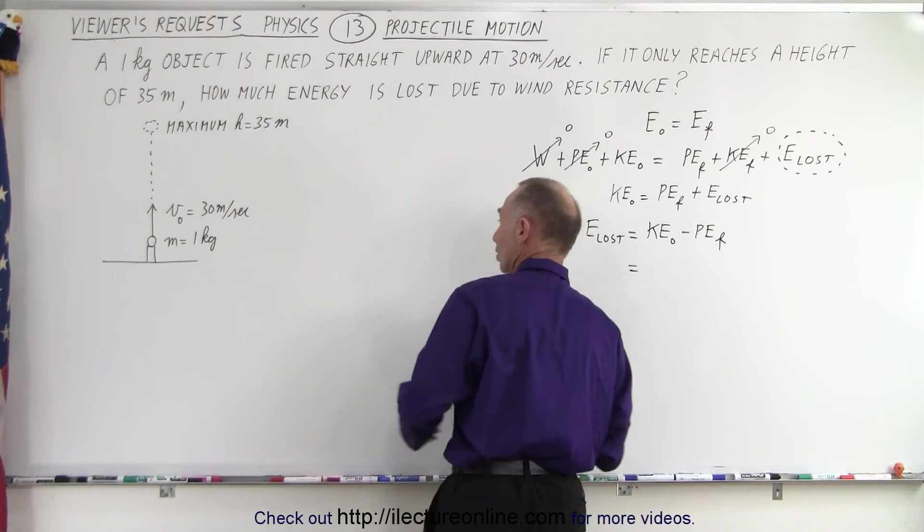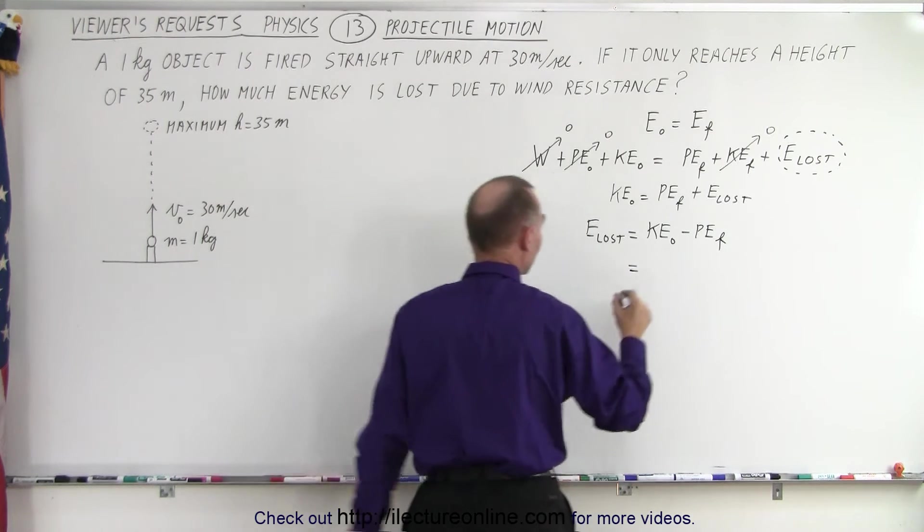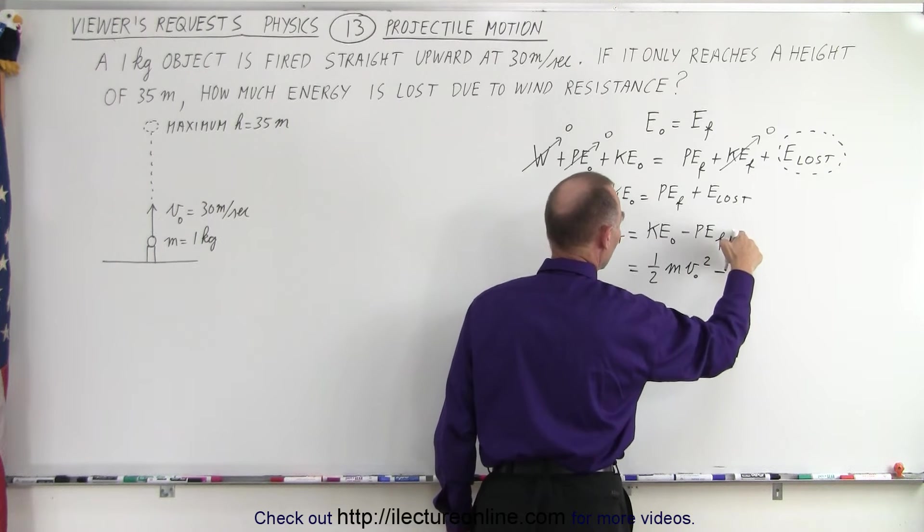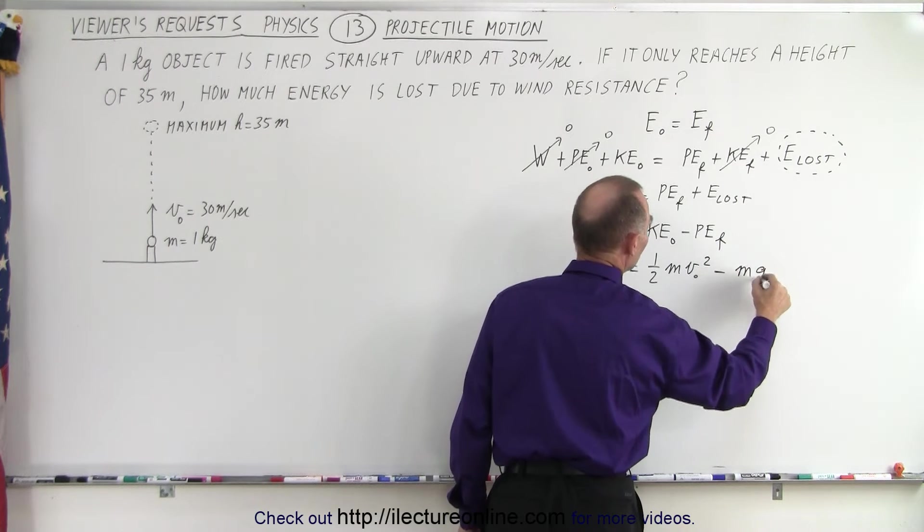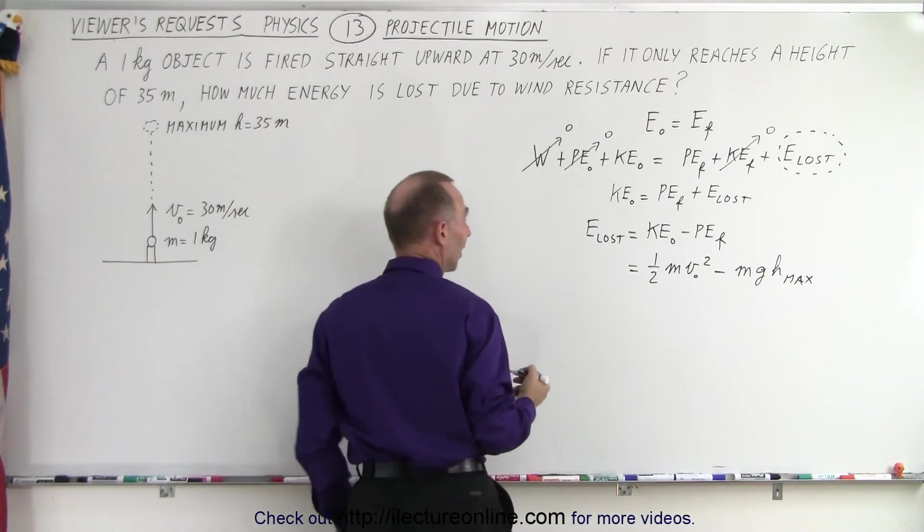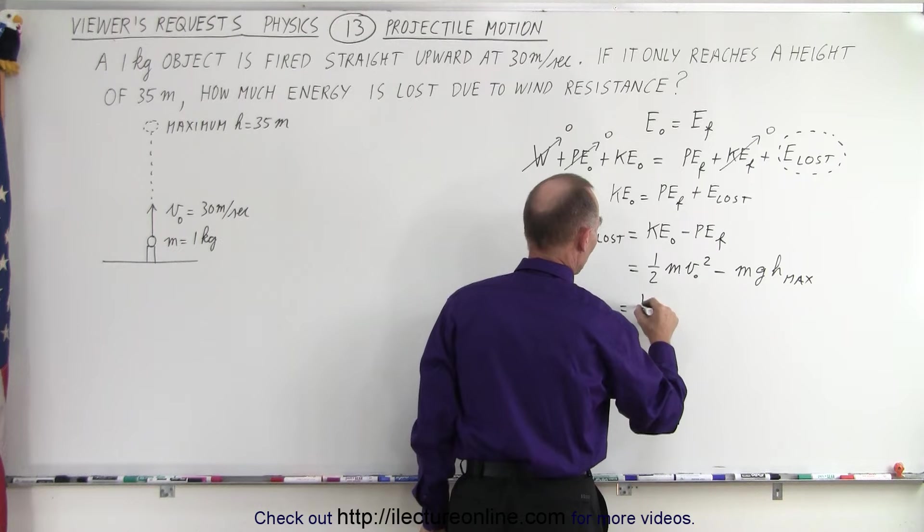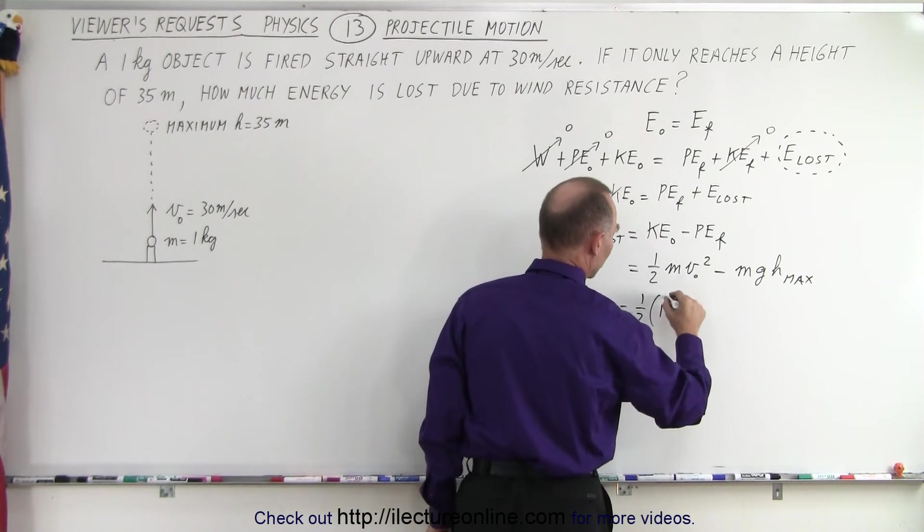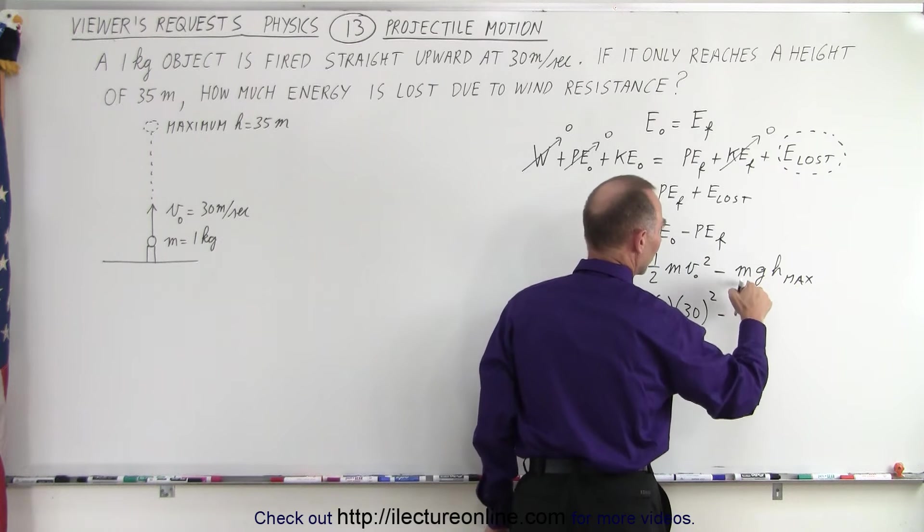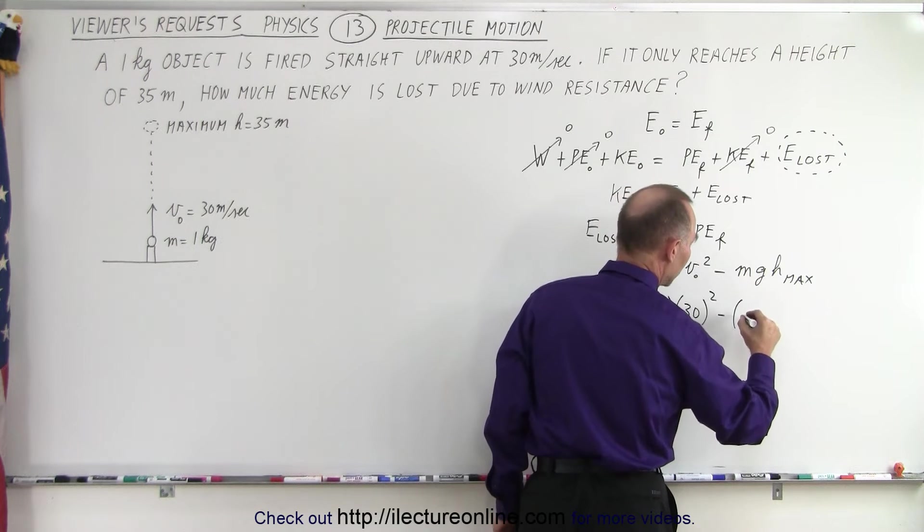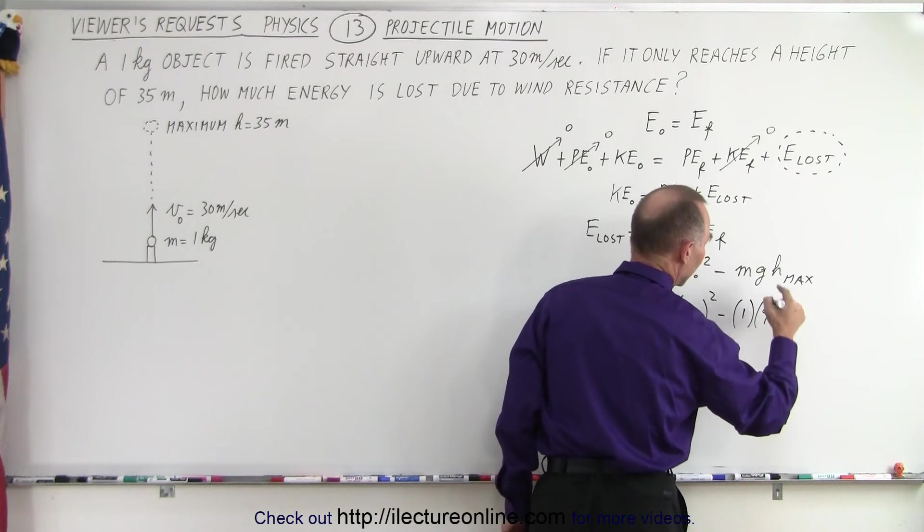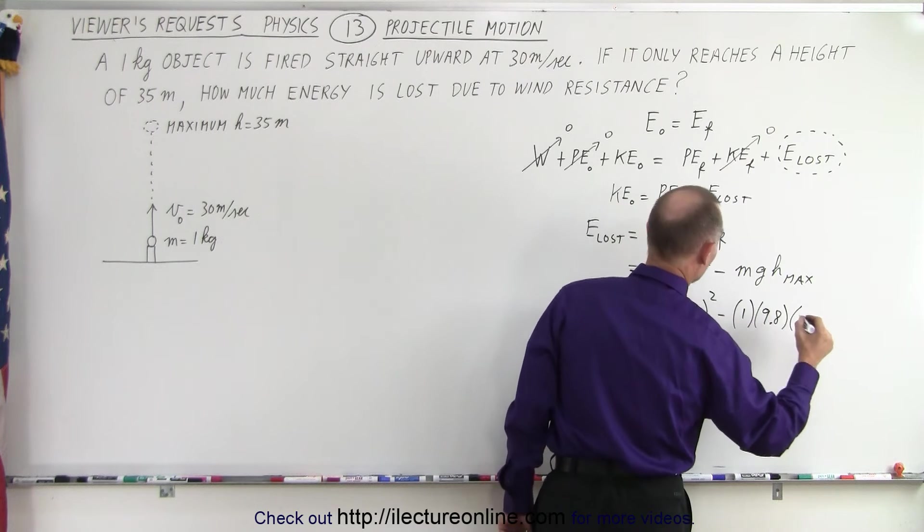Now, the initial kinetic energy will be one-half mv squared, one-half mv initial squared, minus the potential energy final will be mgh max, the maximum height that we reach, which in this case is 35 meters. So this would be equal to one-half times the mass, which is one kilogram, initial velocity 30 meters per second squared, minus the mass, that would be one kilogram, G, 9.8 meters per second squared, and H would be, we said it was 35 meters.